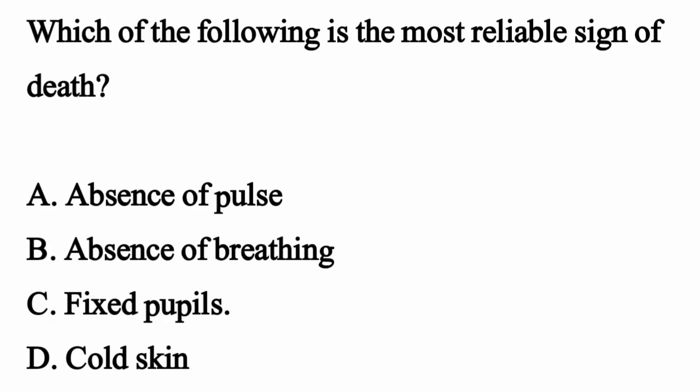Which of the following is the most reliable sign of death? The correct option is Option C, fixed dilated pupils.